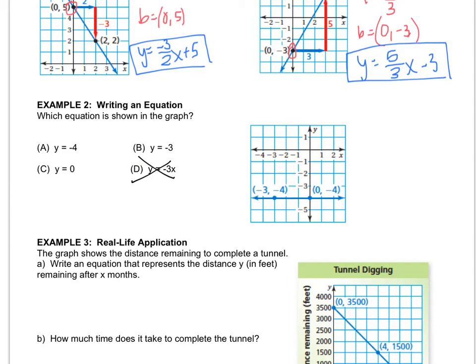where is it hitting? Is it hitting at negative 4? Is it hitting at 0? Or is it hitting at negative 3? Where is that y-intercept? If you said choice A, you got it. It's hitting at negative 4. So the equation of this line is y equals negative 4.